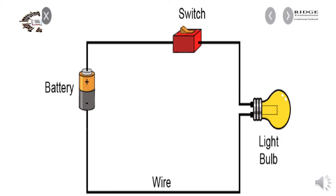See the picture. This is the path of an electron round the circuit. In this picture we can see the battery, switch, wire and bulb.